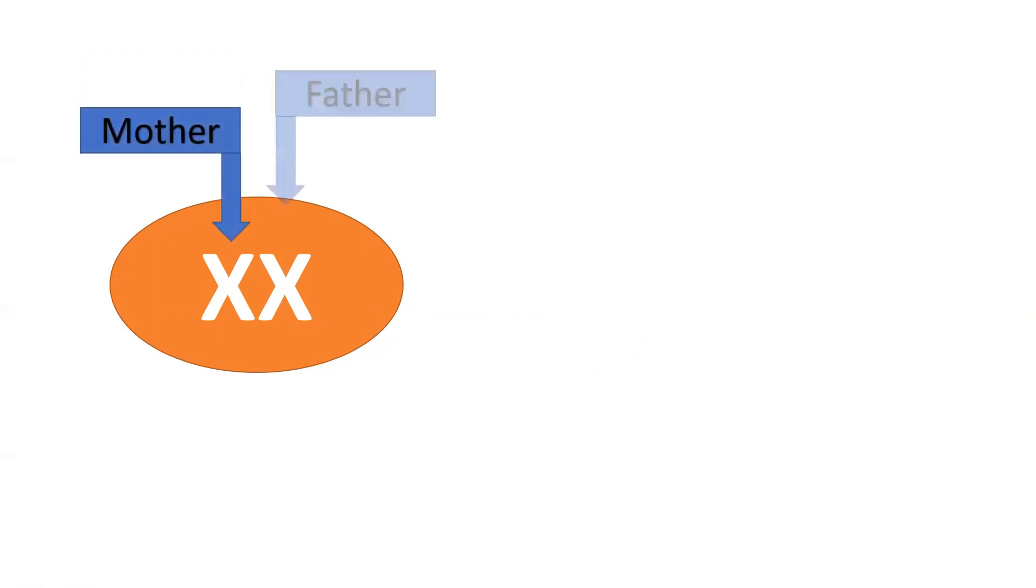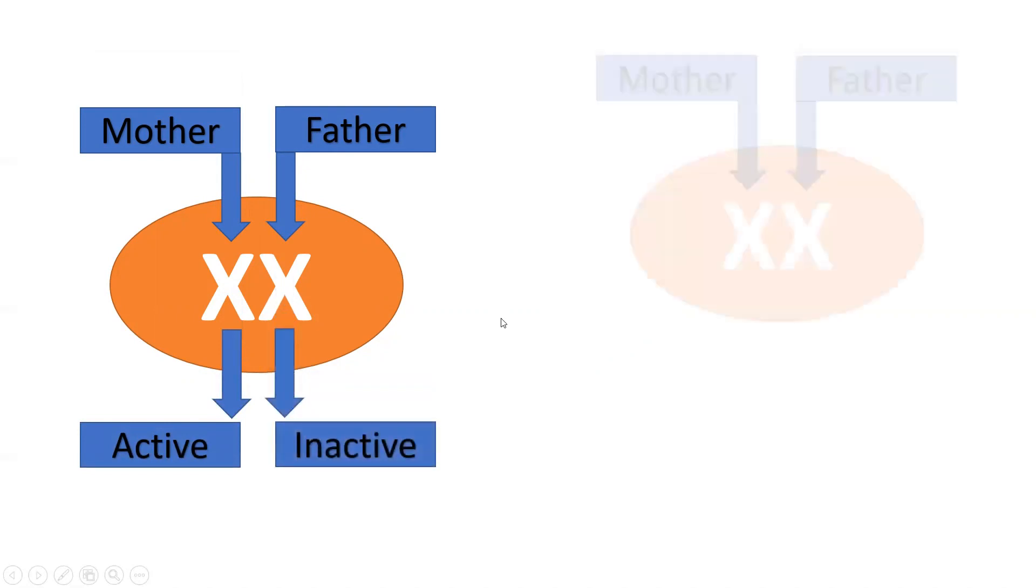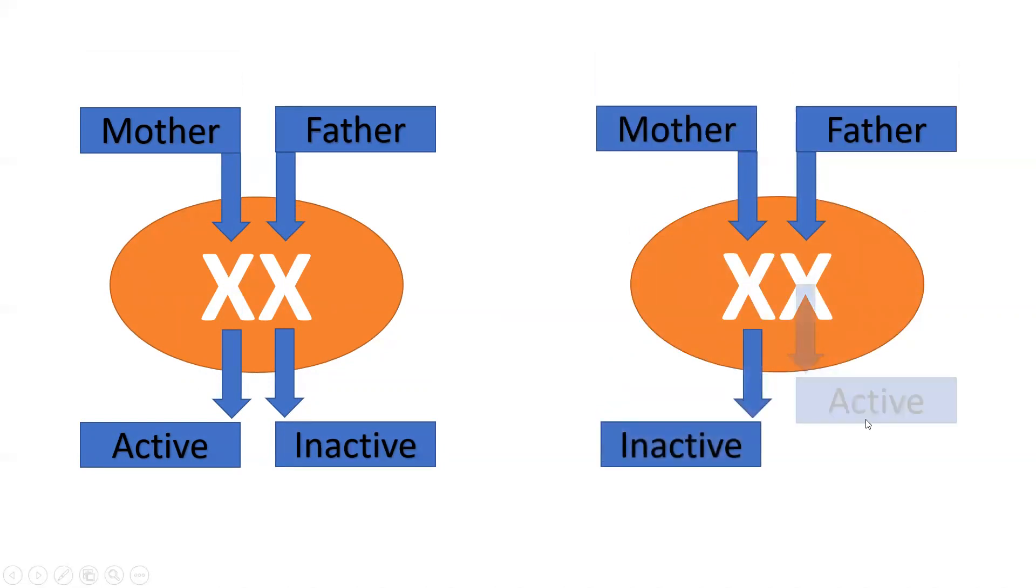Now let's see the female. In the female, there are two X chromosomes - one comes from mother and one comes from father. But both X chromosomes are not active. We will see that one cellar has maternal X inactive and paternal X active, while another cellar has paternal X inactive and maternal X active. This X inactivation happens 15 days after fertilization by the process of methylation.